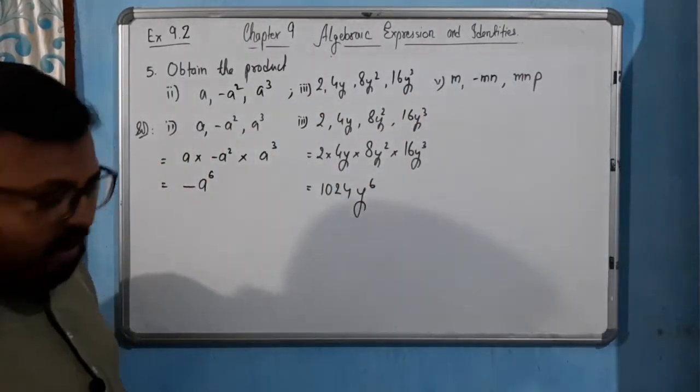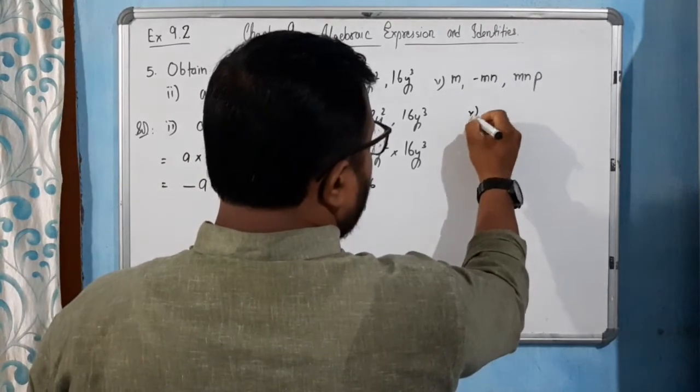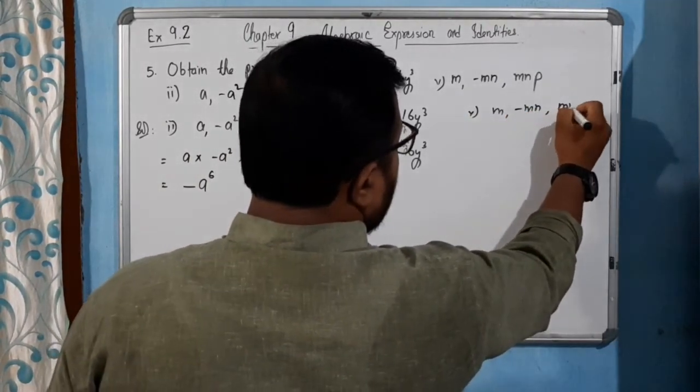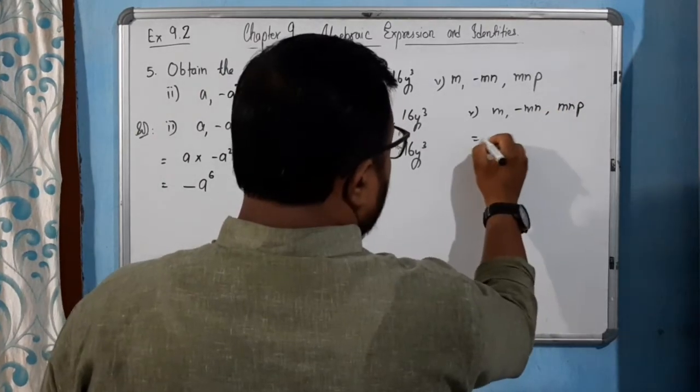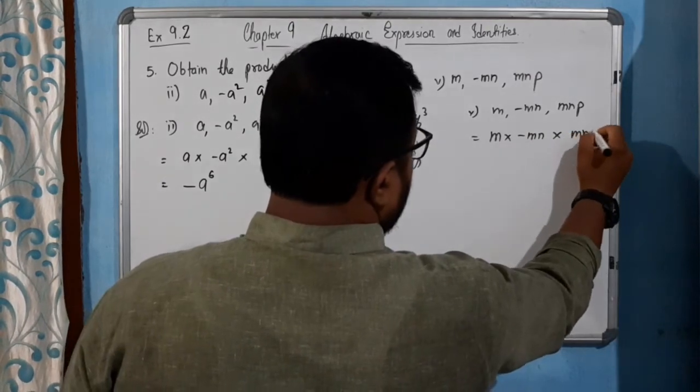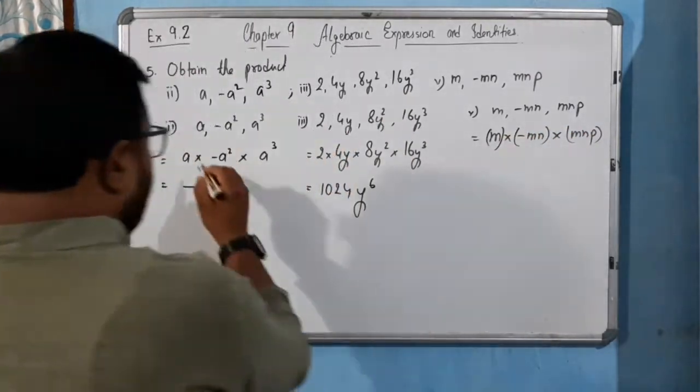Now for the last one, for number 5, here it is m, minus mn, and mnp. So product is m into minus mn into mnp. Put this thing in the bracket, really nice, here also.